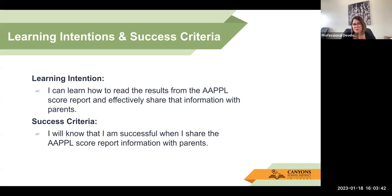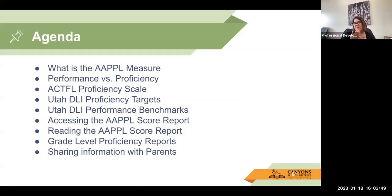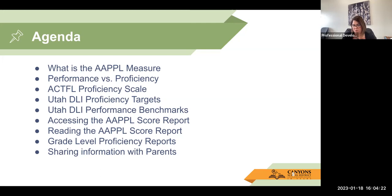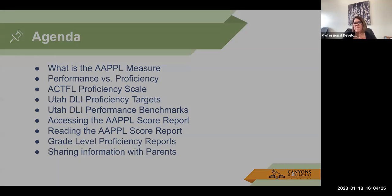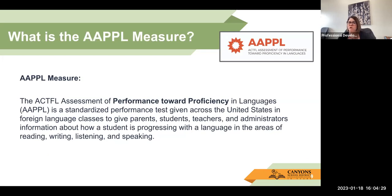You'll know you're successful when you can share that report with parents at your parent-teacher conference time. Here's our agenda — these are all the things we're going to talk about today. First, what is the APPLE measure? We'll talk about performance versus proficiency, the ACTFL proficiency scale, the Utah DLI proficiency targets, the DLI performance benchmarks, accessing and reading the APPLE score report, and sharing that information with parents at parent-teacher conferences.